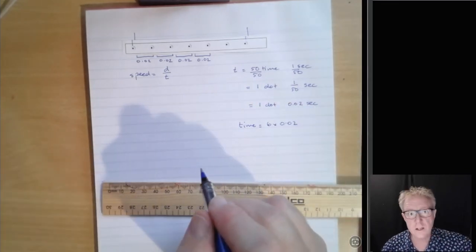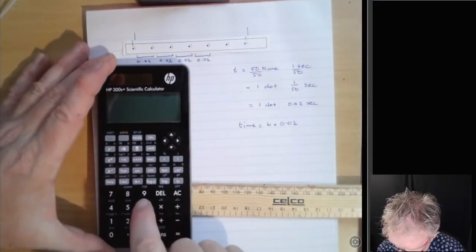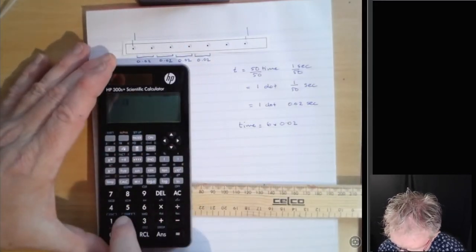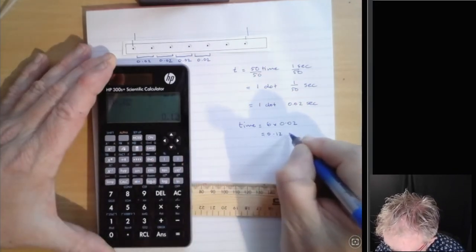Now, the handy good old dandy calculator will show you what that is. So we go 6 times 0.02 equals, and that is 0.12 seconds.